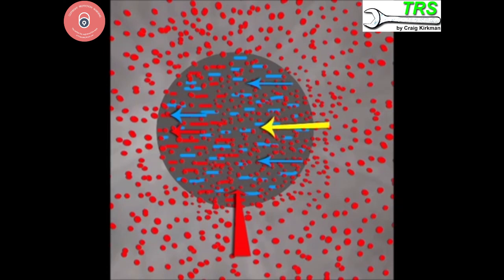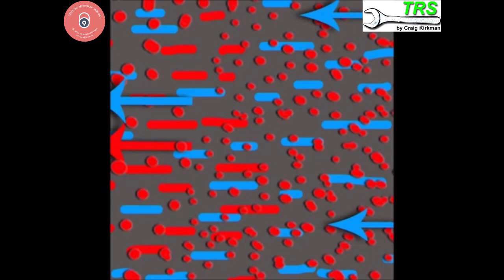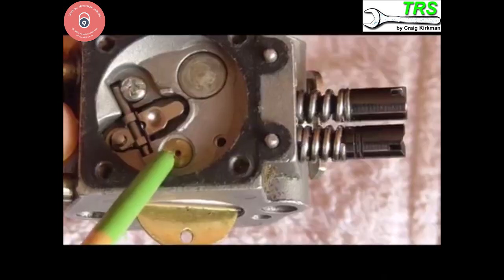Any blockages in this pipe would starve the engine of fuel and affect its starting and running abilities. But the vacuum from the engine is pulling us through into the inlet tube of the carburetor near the venturi down there.